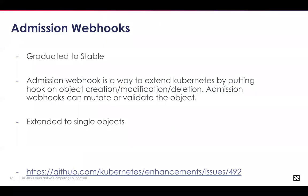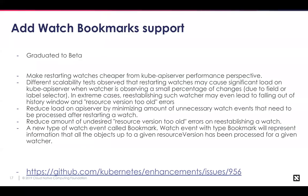Admission webhooks are graduating to stable — they've been widely used for extending Kubernetes and were in beta for three releases. It's a way to extend Kubernetes by putting a hook on an object during creation, modification, or deletion. The webhook can mutate or validate the object and supports namespace selectors. You may want to extend that to include a single object selector rather than applying to all activity in a namespace. Also, Bookmark Support, discussed in 1.15, is graduating to beta in 1.16, relating to the Watch API — one of the fundamentals of the Kubernetes API.